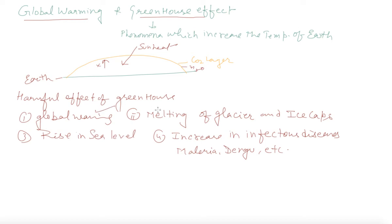Melting of ice, rise in sea level, increase in infectious diseases like malaria, dengue, yellow fever. Then acid rain - I discussed in the previous class that is NO2 plus SO2.